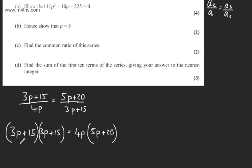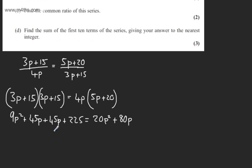So we expand: 9p squared plus 45p plus another 45p plus 15 squared, which is 225, equals 20p squared. This is just expanding the bracket here, plus 80p.